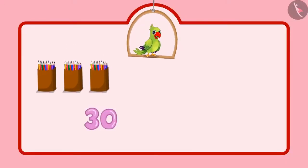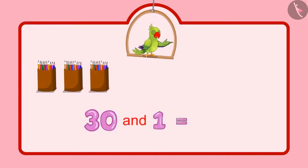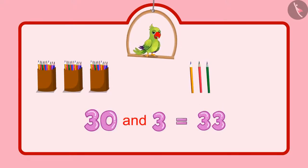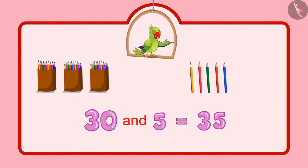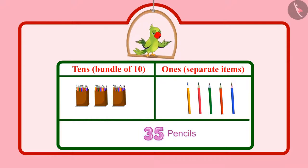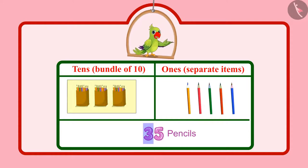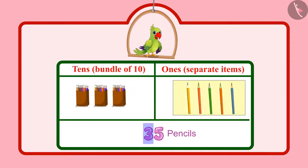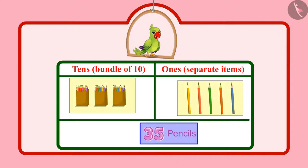Children, can you tell me how many pencils Chotu has now? Chotu had 30 pencils, followed by 31, 32, 33, 34, 35. So Chotu has 35 pencils in total. In 35 pencils, 3 means 3 tens and 5 means 5 units, which means a total of 35 pencils.